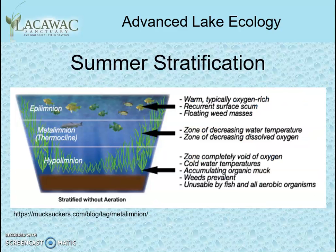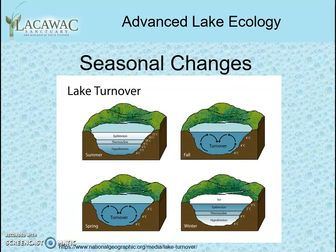Because the density in the thermocline changes so rapidly, it acts as a barrier that prevents molecules and small particles from passing through. Since oxygen from the surface cannot pass through the thermocline, organisms such as plankton and fish that die and fall into the bottom decompose. That decomposition uses up the oxygen at the bottom of the lake, creating an anaerobic environment in the summer. If lakes were to stay permanently stratified, it would lead to the locking of valuable nutrients in the bottom of the lake in an anaerobic environment.